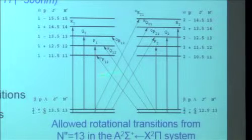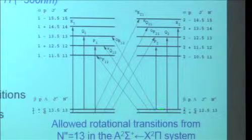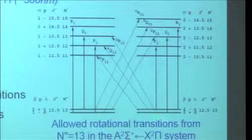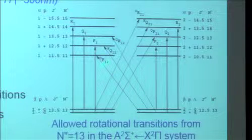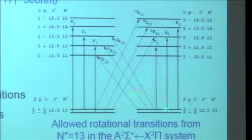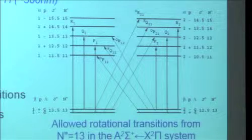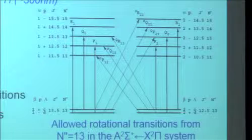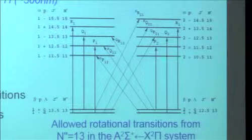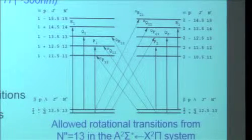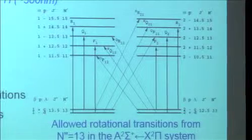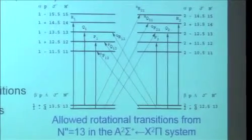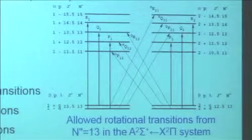The big ones are the six strong lines. Why six? For one value of N there are two values of J, and each of those can have three branches: P, Q, and R — so that's how we get to six. You have to study this to see that these are all the possibilities. R means delta J is one, Q means delta J is zero, P means delta J is minus one.